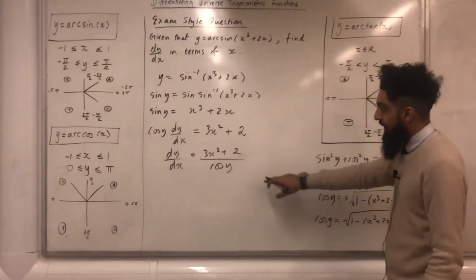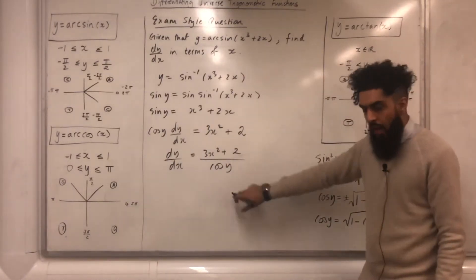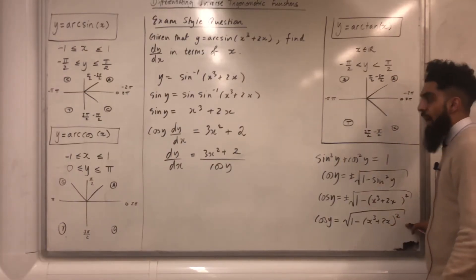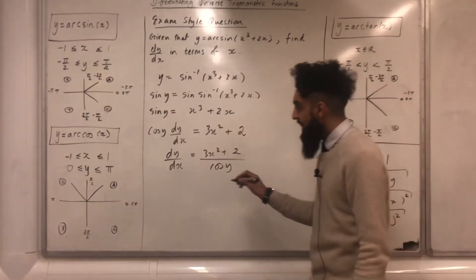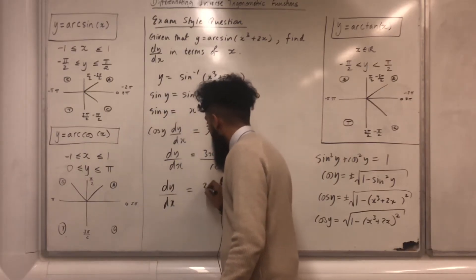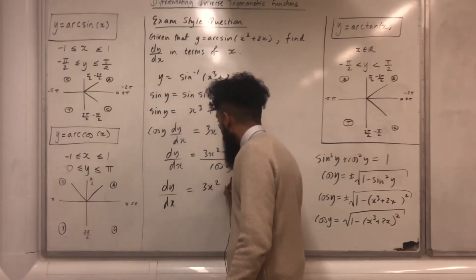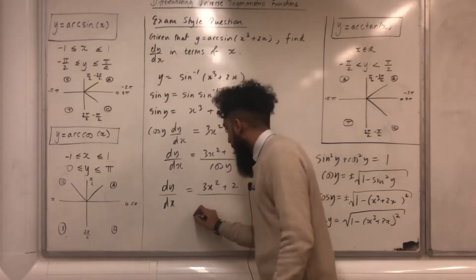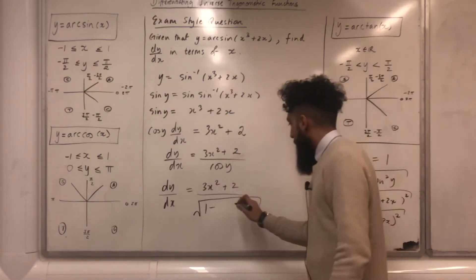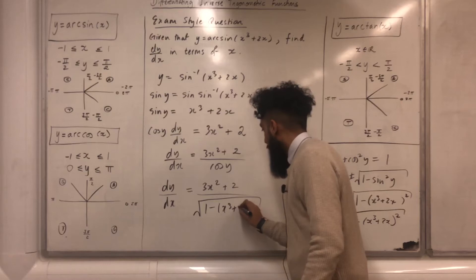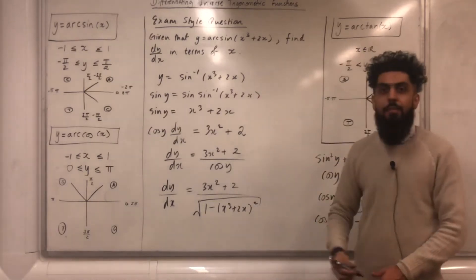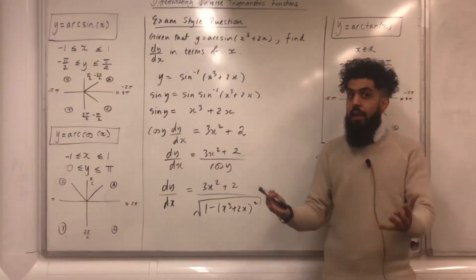Replacing cos y gives dy/dx equals 3x squared plus 2 all over square root of 1 minus (x cubed plus 2x) squared. That is dy/dx in terms of x.